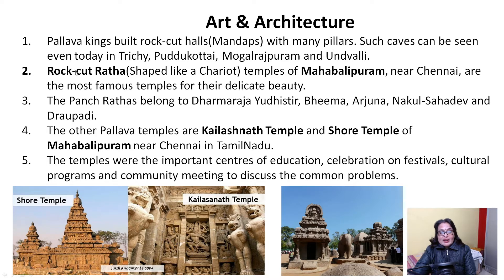Another example of Pallava architecture is the rock-cut ratha, shaped like a chariot. These are located at Mahabalipuram, near Chennai in Tamil Nadu, and are famous for their delicate beauty. The most notable are the Pancha Rathas - five rathas named after the Pandavas: Dharmaraja (Yudhishthira), Bhima, Arjuna, Nakula-Sahadeva, and Draupadi.